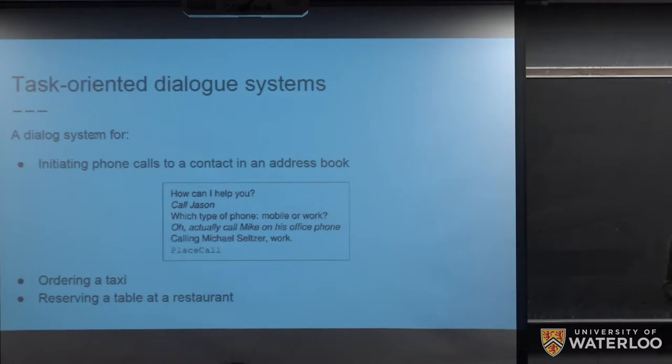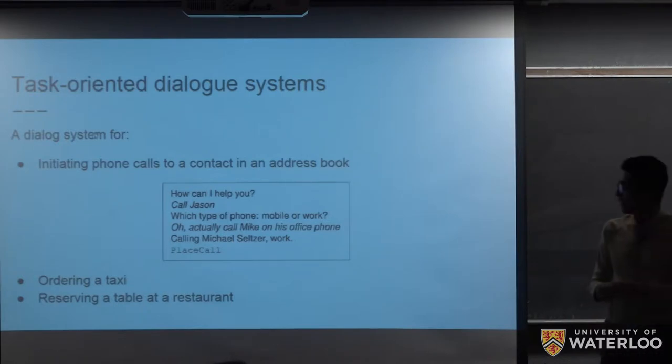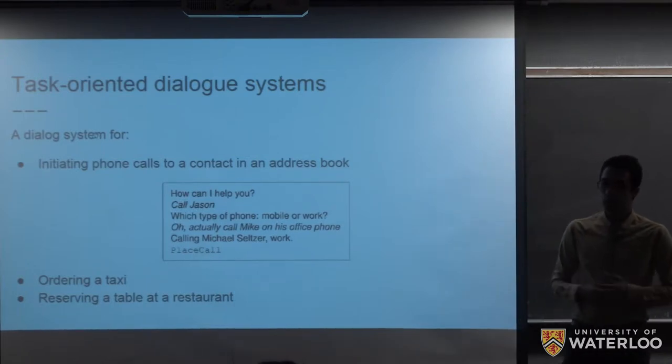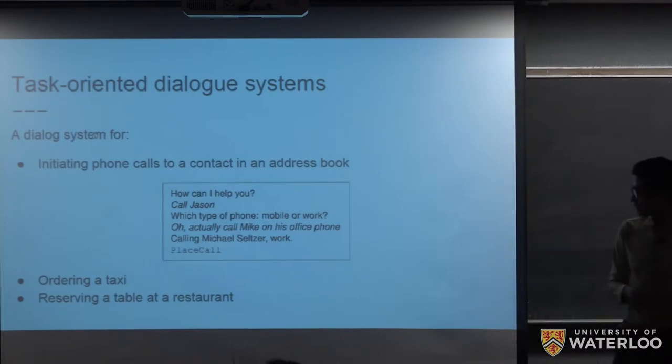First off, let's see what is the problem that this paper want to tackle. This paper proposes an end-to-end trainable model for task-oriented dialogue systems. Task-oriented dialogue systems are different from open-domain dialogue systems in the sense that they are designed to complete some specific tasks using template sentences. An example for a task-oriented dialogue system could be a system for initiating a phone call to a contact in an address book. In this case, the user may say, call Jason. And then the system answers which type of phone, mobile or work. And then finally, a phone call is initiated.